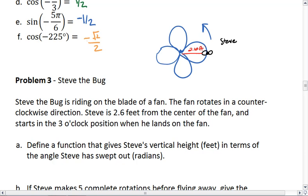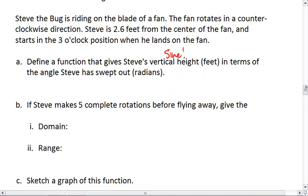We want to define a function that gives Steve's vertical height. This means we're working with sine, in terms of the angle Steve has swept out. First of all, define your variables.